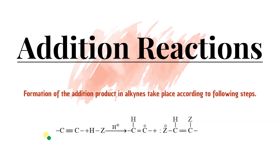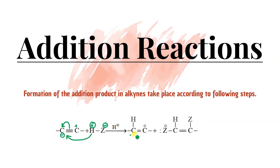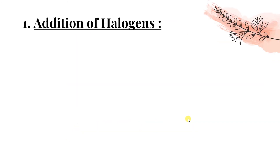In the addition mechanism: for H-Z adding across a triple bond, the bond breaks such that Z gets a negative charge and H gets a positive charge. The H⁺ attaches to one carbon (forming a carbocation), then Z⁻ attacks the carbocation to give the addition product. For halogen addition (X₂), this is the halogen addition mechanism.